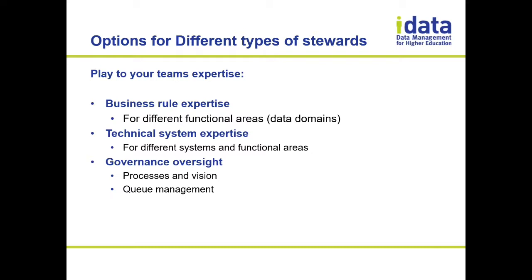They may not have technical system expertise over your student information system, or maybe they do — and that's okay. You want to think about who can span this, because you're not going to have success if you ask people to make decisions on things outside their comfort zone or level of expertise. Think about business rule expertise over different data domains, and technical system expertise over the different systems within those functional areas.